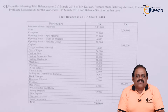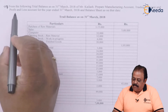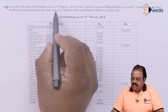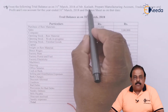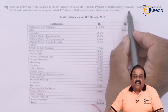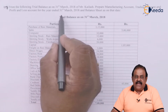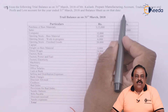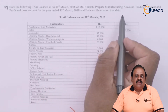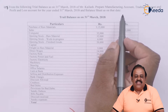Let us start our discussion with a question. From the following trial balance as on 31st March 2018 of Mr. Kailash, proprietor, prepare a manufacturing account, trading account, profit and loss account for the year ended 31st March 2018, and a balance sheet as on that date. We will be marking the question as per the items of manufacturing account, trading account, profit and loss account, and balance sheet.